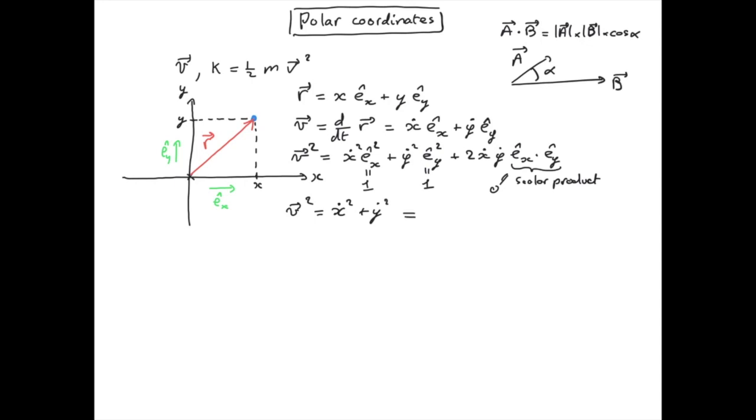Giving the kinetic energy half m times x dot squared plus y dot squared. This is fine, but what we want is the velocity vector and the kinetic energy expressed in polar coordinates.